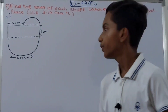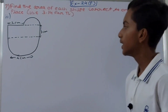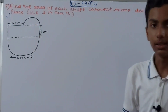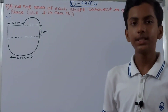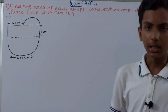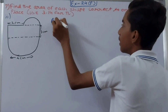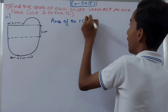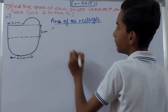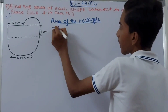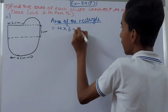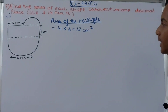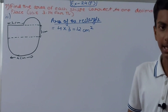Now let's move on to the next part. Here we have a different type of figure, and we can clearly see that again we have one semicircle, another semicircle, and a rectangle. So we have to find the area of these shapes separately and add them together. Let's begin with the area of the rectangle, which is 4 into 3, that is 12 square centimeters.